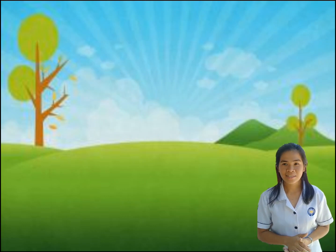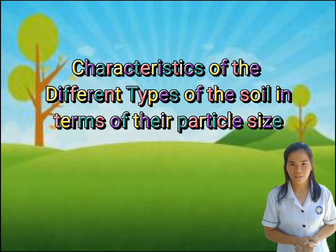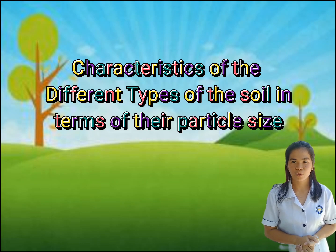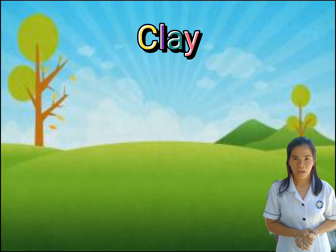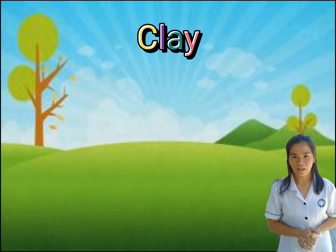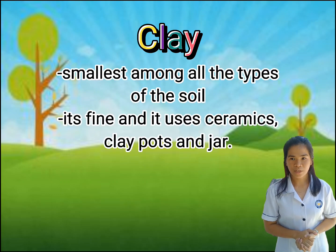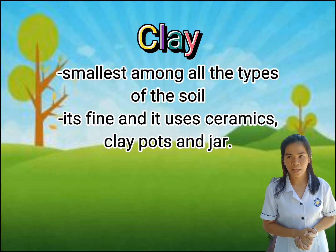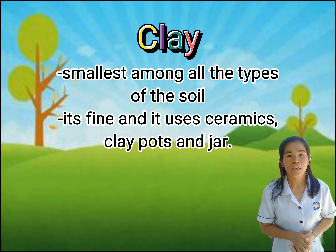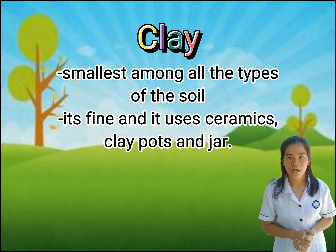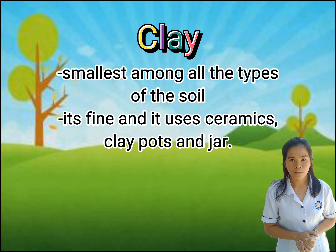Let's now proceed to the characteristics of the different types of soil in terms of their particle size. Clay is the smallest among all the types of soil. It is fine and it is used as ceramics, clay pots, and jars.